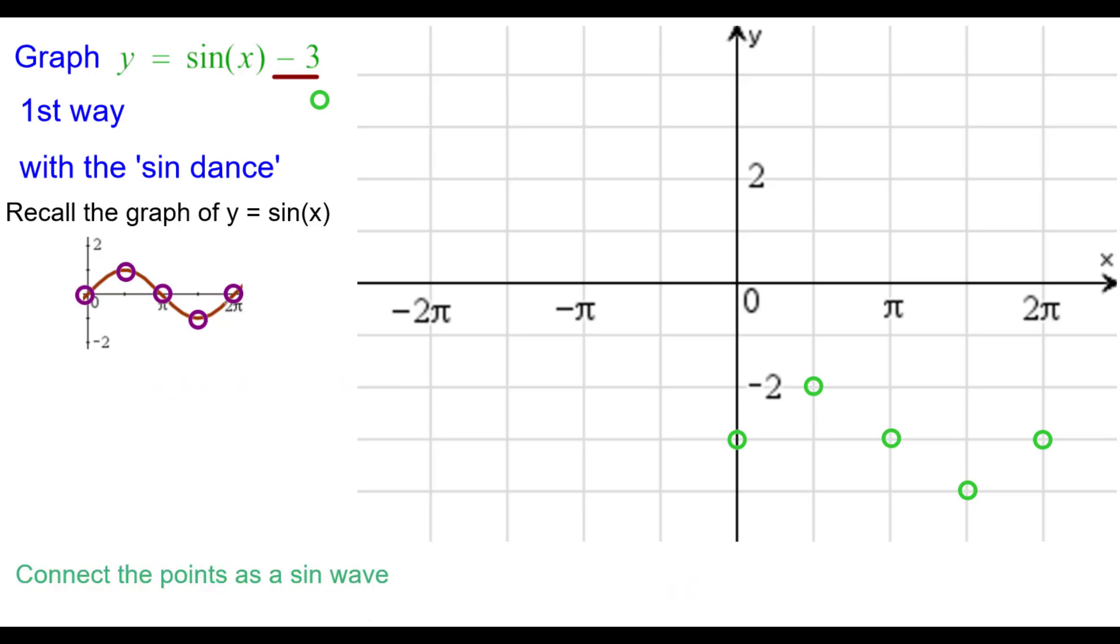We need to connect the points as a sine wave. So the first three points will connect as a frown, concave down curve. The next three will be concave up as a smile. This is one period of the sine wave. We can duplicate the wave in the negative direction.